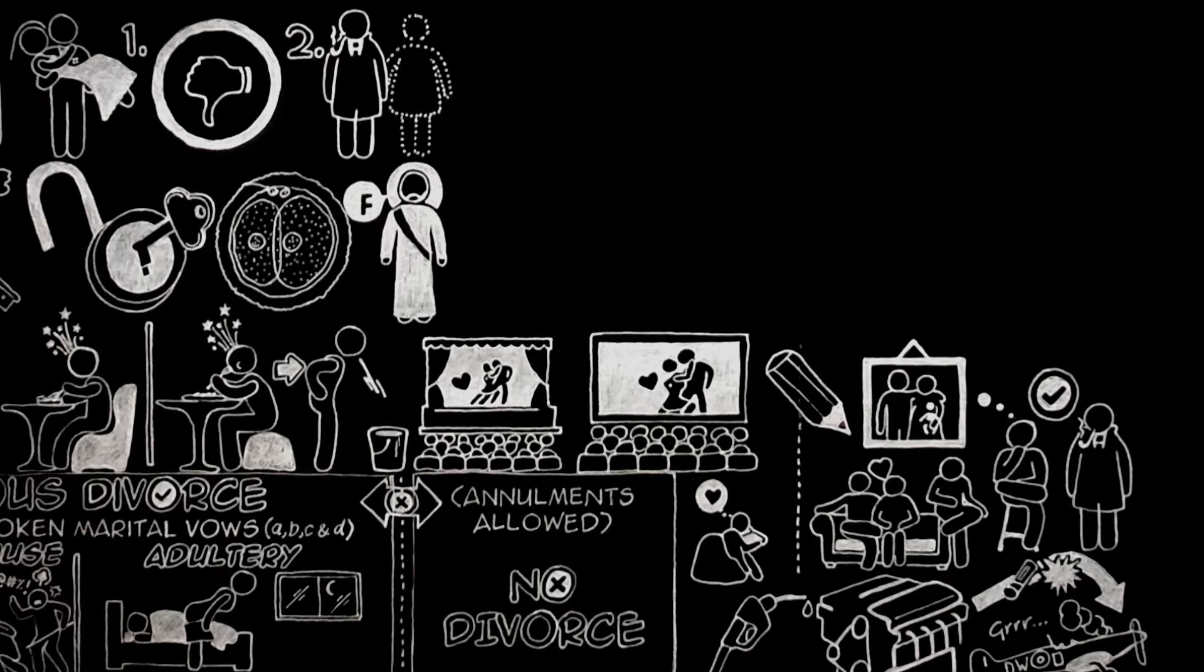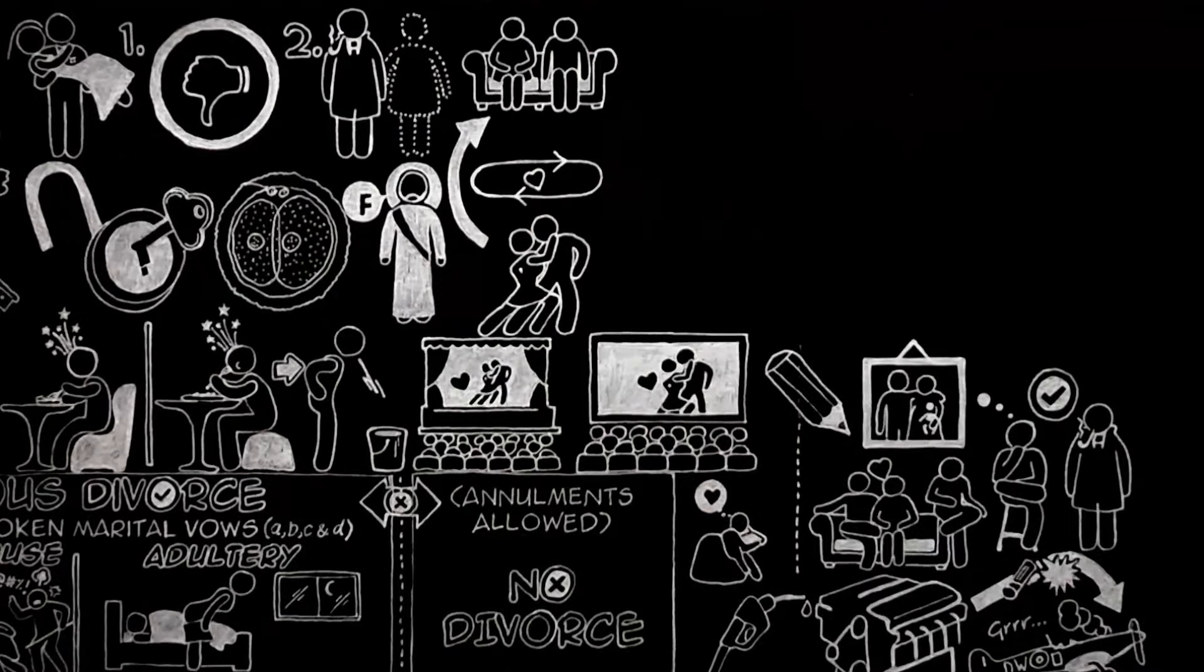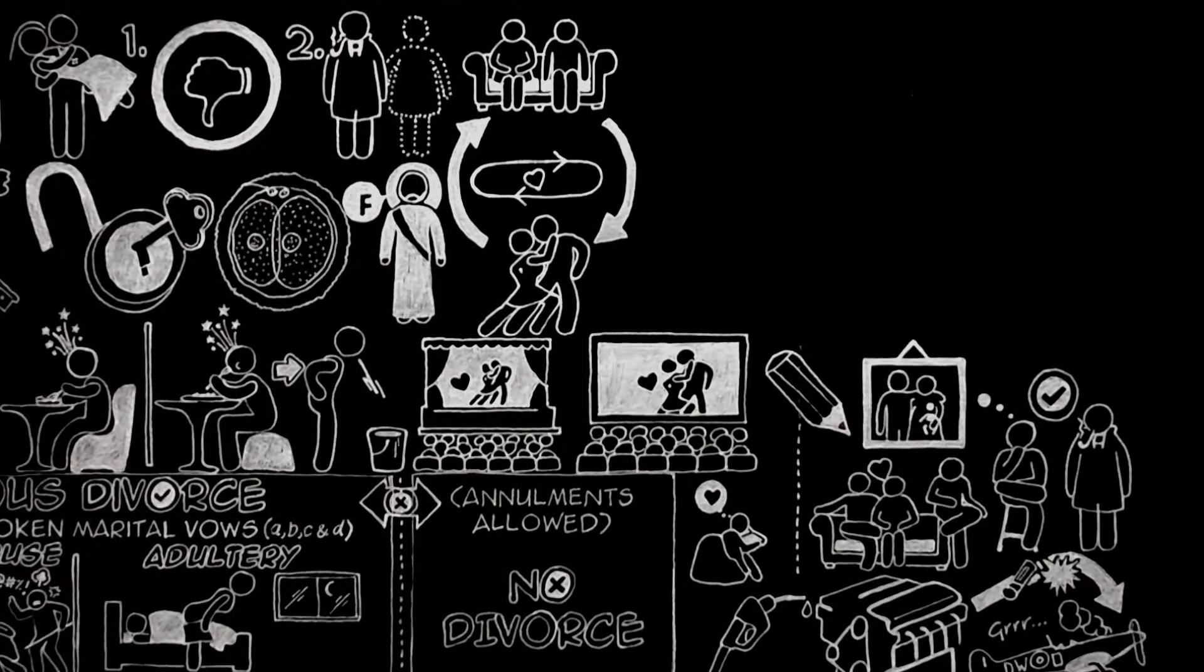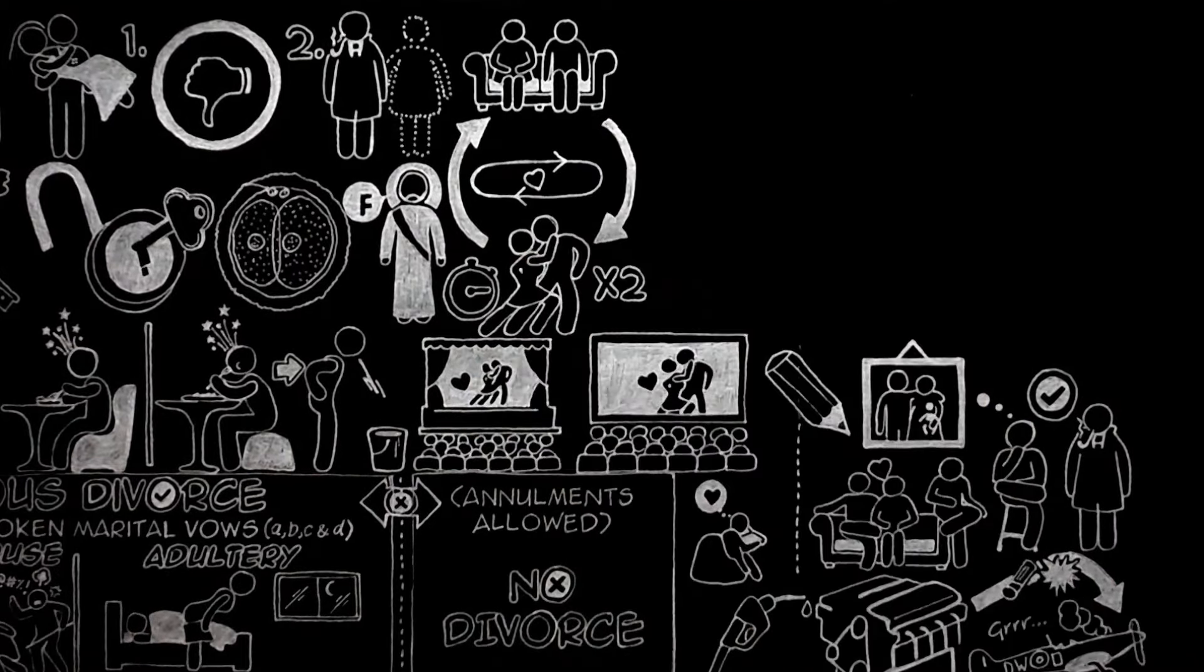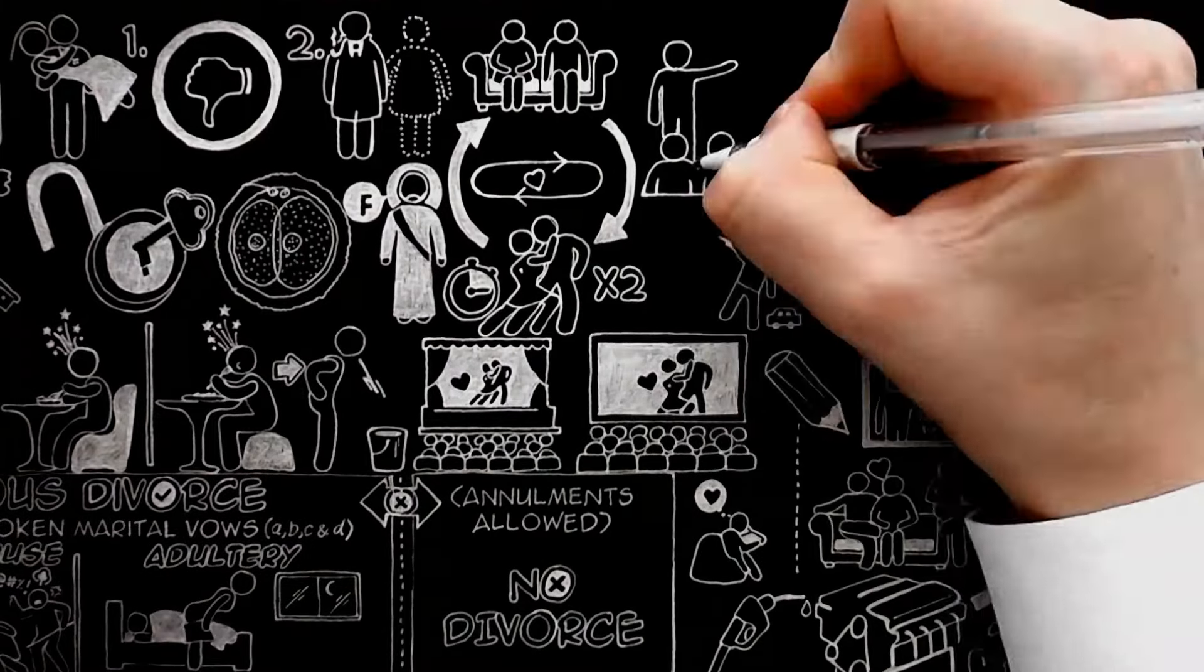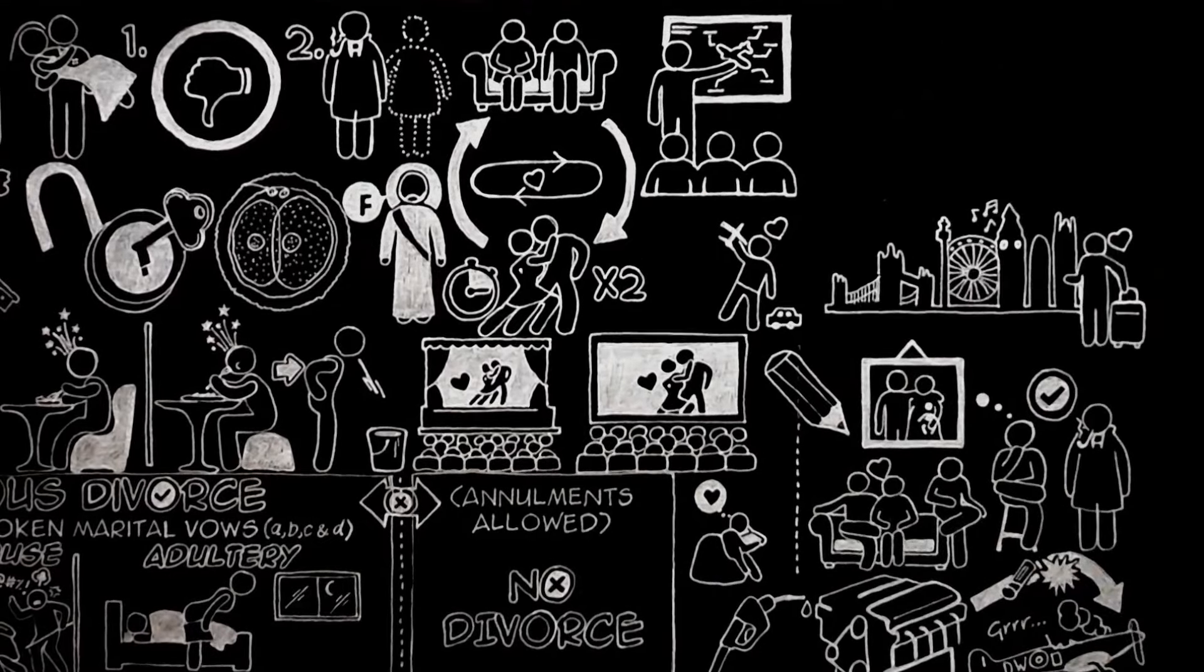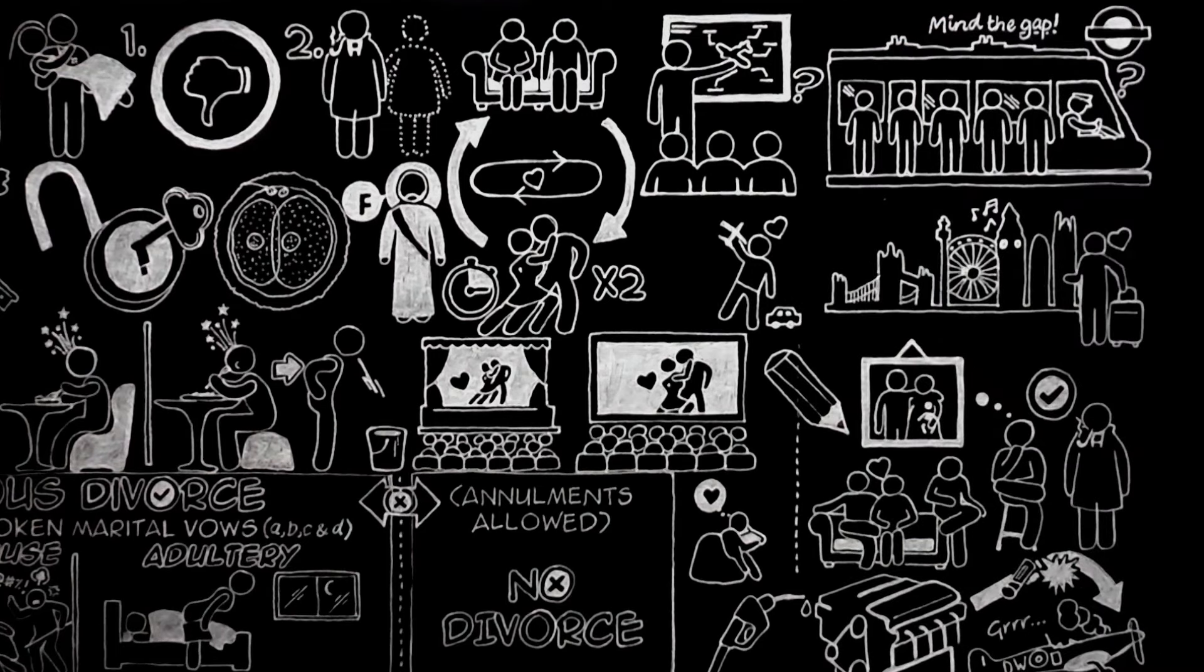People get from books the idea that if you have married the right person, you may expect to go on being in love forever. As a result, when they find they are not, they think this proves they have made a mistake and are entitled to a change, not realizing that when they have changed, the glamour will presently go out of the new love just as it went out of the old one. In this department of life, as in every other, thrills come at the beginning and do not last. The sort of thrill a boy has at the first idea of flying will not go on when he has joined the RAF and is really learning to fly. The thrill you feel on first seeing some delightful place dies away when you really go to live there.